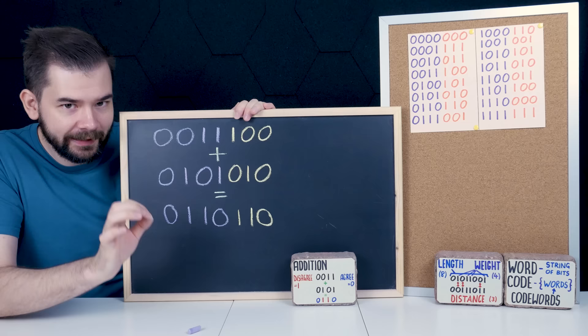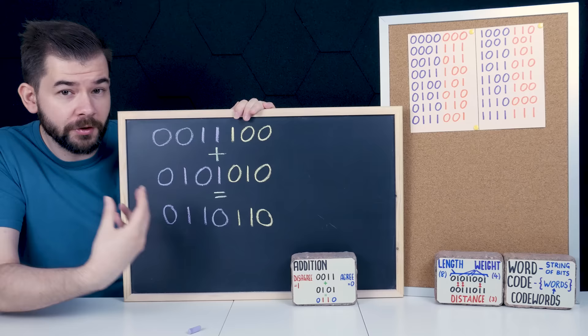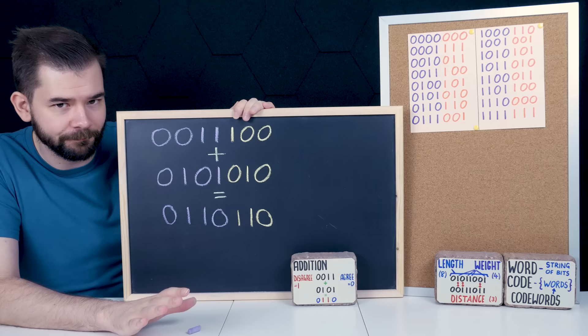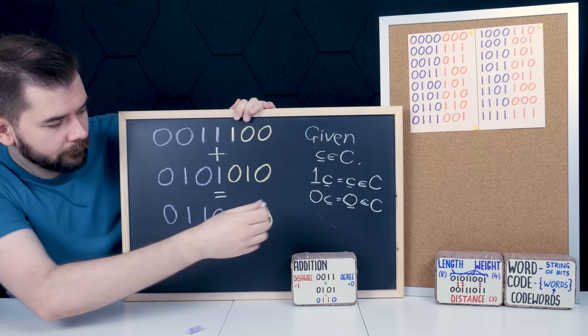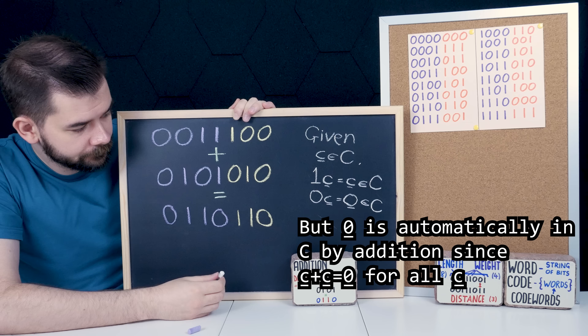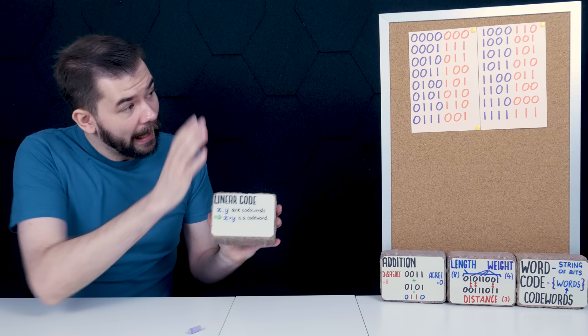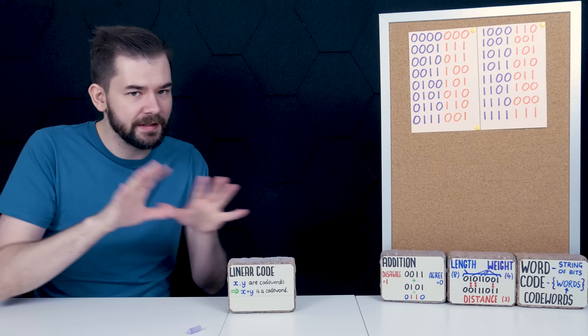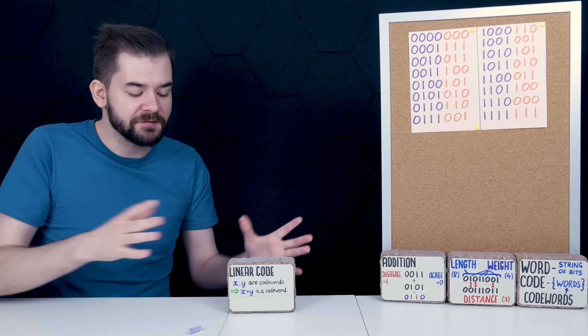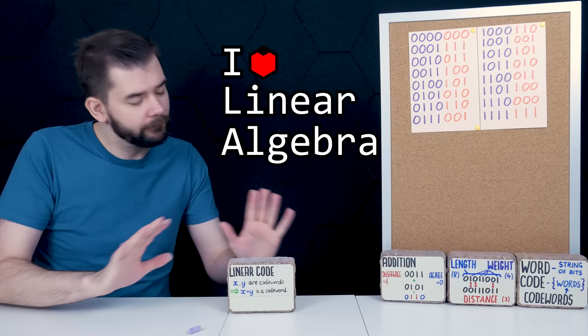Usually the definition of a linear code also demands that any scalar multiple of a code word is also a code word. But because we're in the binary case, we can actually ignore that condition — the only scalars are zero and one. We know that the zero word is a member of the code due to addition, because any code word plus itself is the zero word. As it turns out, this Hamming code is linear. Linearity is a very powerful property as it allows us to bring in all sorts of tools from linear algebra in order to better understand codes. The first thing linearity gives us is to simplify how a code is expressed.